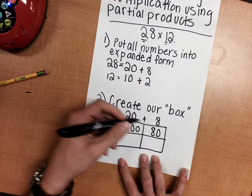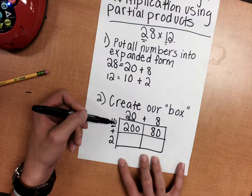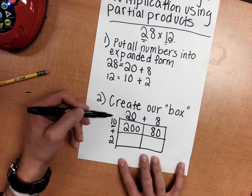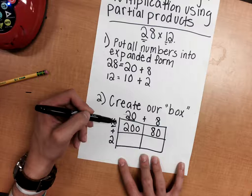I'm going to stop right here and explain why we're multiplying these numbers together. When we have our 10, this 10 is going to take up this entire row. So we're going to multiply 10 by 20 and we're going to multiply 10 by 8.